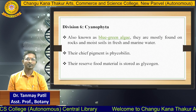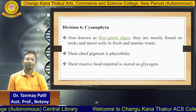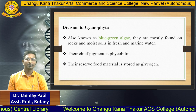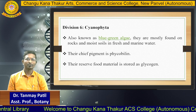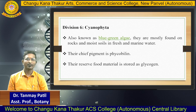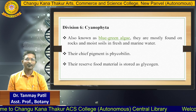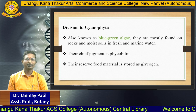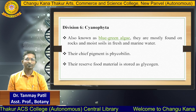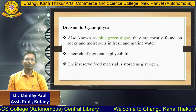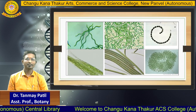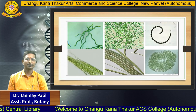The next division is Cyanophyta, which is also known as blue-green algae. They are mostly found on rocks and moist soil in fresh and marine water. Their reserve food material is stored as glycogen. Here is a picture of Cyanophyta algae.